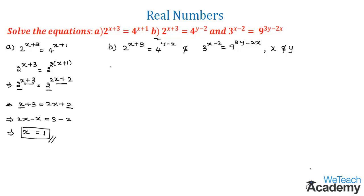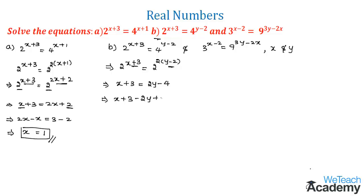We rewrite the first equation as 2^(x+3) = 2² raised to (y-2). Since the bases are equal, equating powers gives x + 3 = 2y - 4. Bringing all terms to the left hand side: x - 2y + 7 = 0. Let us call this Equation 1.